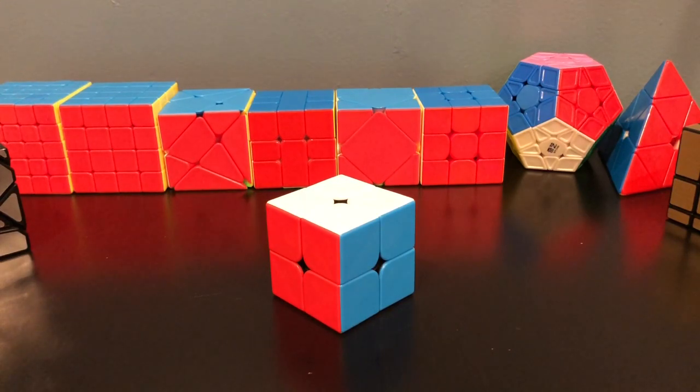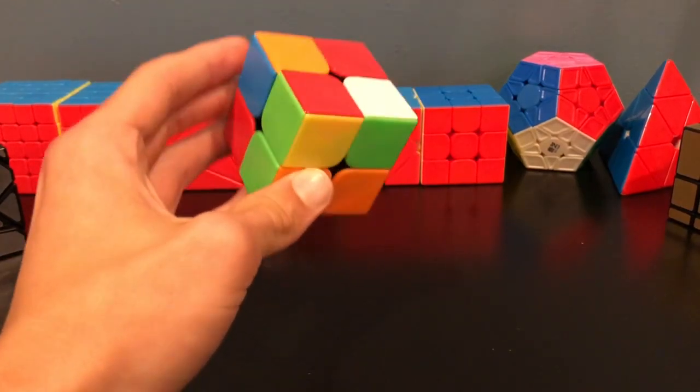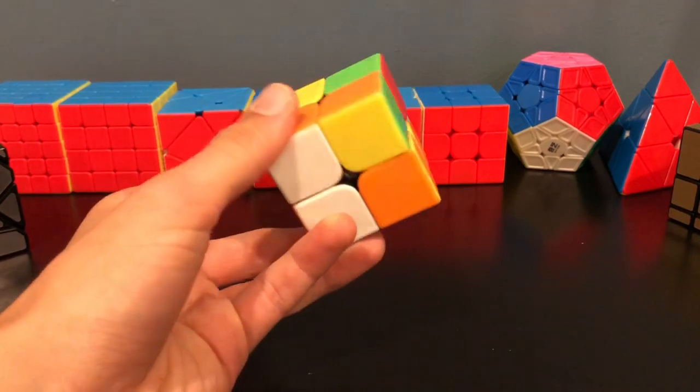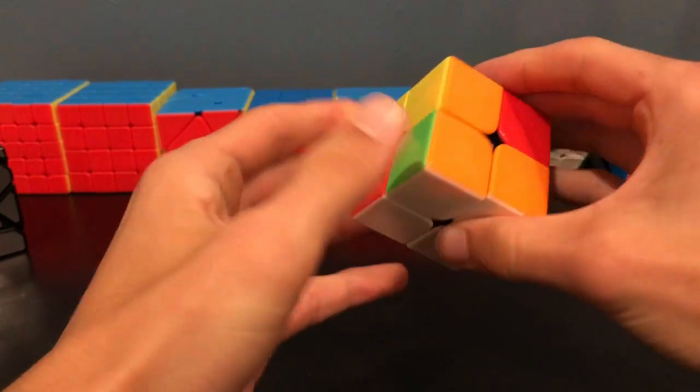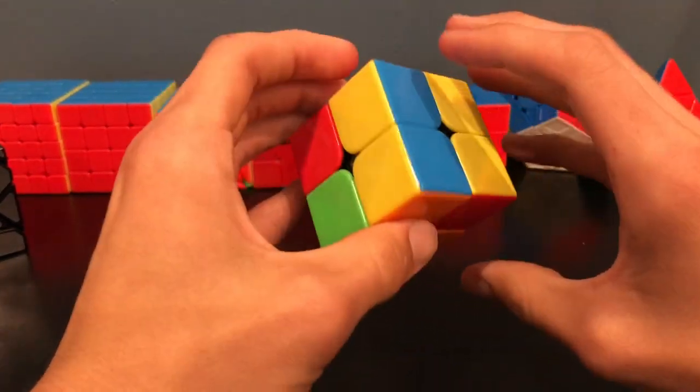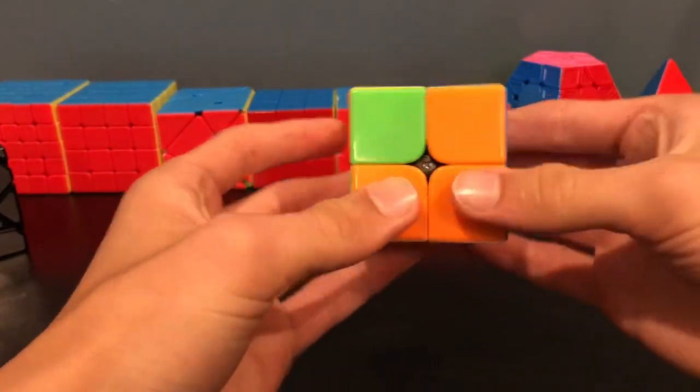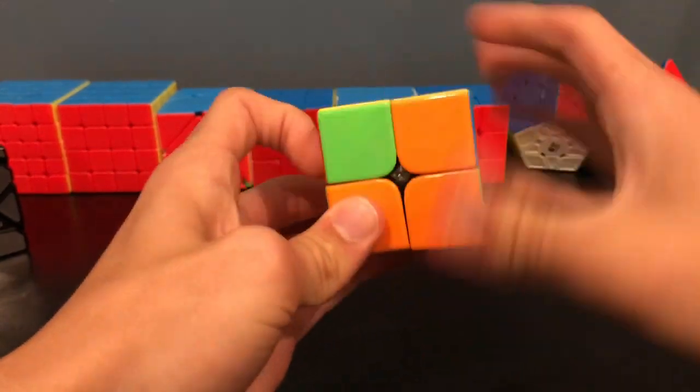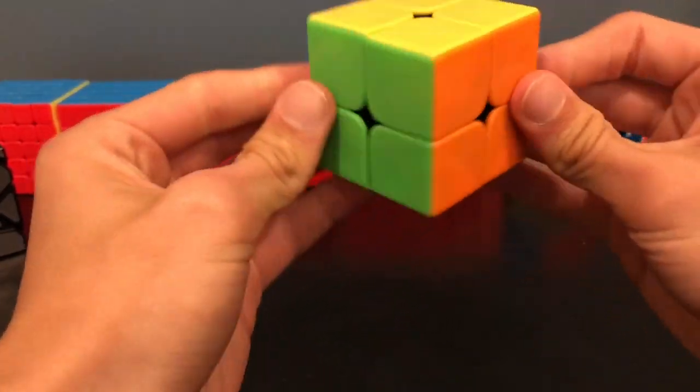Welcome back. Today we're going to go over the advanced method for the 2x2, also known as the Ortega method. First, let's do an overview of what the Ortega method is. The first step is solving a side, so let's do white. It doesn't have to be perfect all the way around, you just have to solve a side. Then next, you orient the last layer in one step. There we go, there's all the yellow. Then you'll move around all the rest of the pieces in one algorithm. Then you're done.